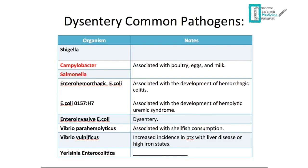Campylobacter and Salmonella are associated with poultry, eggs, and milk. In a scenario where a patient ate chicken and later develops bloody diarrhea, think Campylobacter or Salmonella as the most likely organisms. Another organism is enterohemorrhagic E. coli, which causes hemorrhagic colitis — bloody diarrhea.